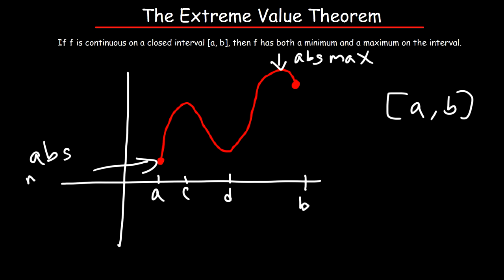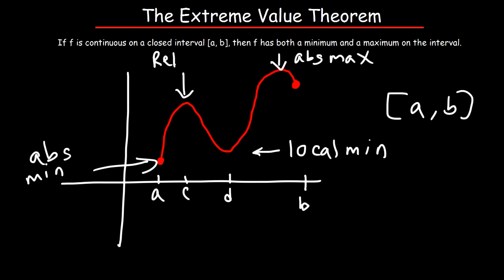And a is the lowest point of the graph, so that's the absolute minimum. In this example we have two other things to pay attention to. At point d, this is known as a local minimum, also known as a relative minimum. And at c we have another relative extrema — that's a local max or a relative max. Notice that we can draw a horizontal tangent line at c and at d.